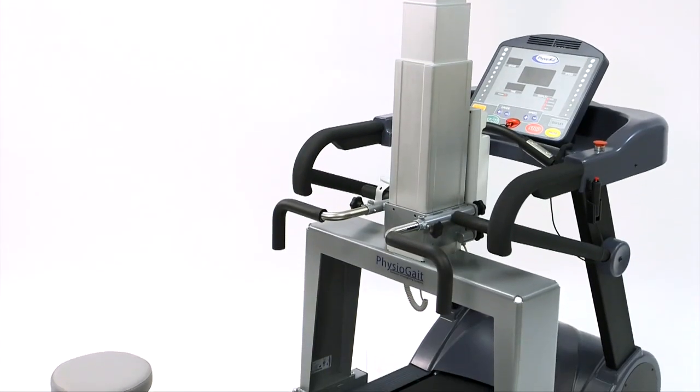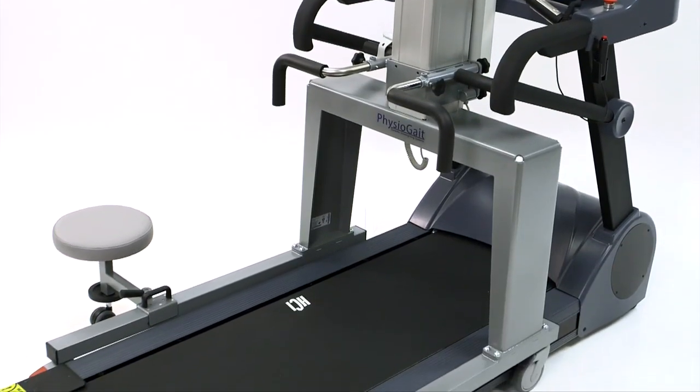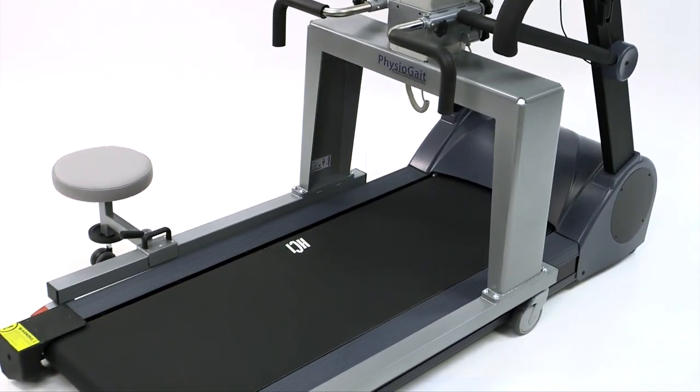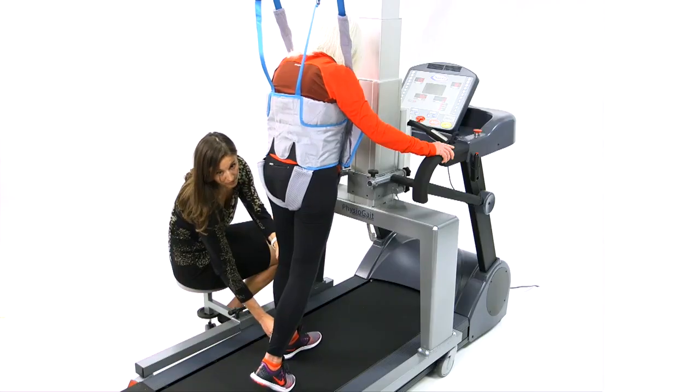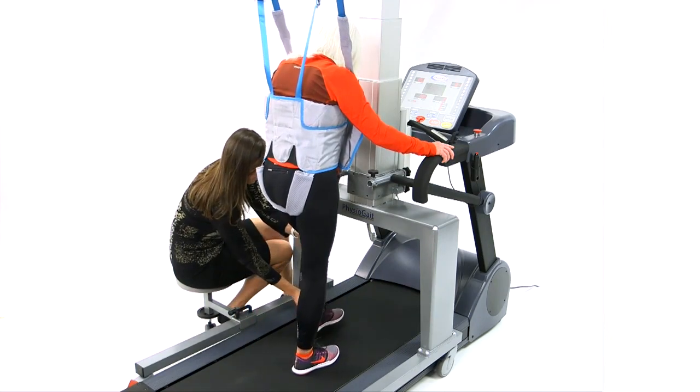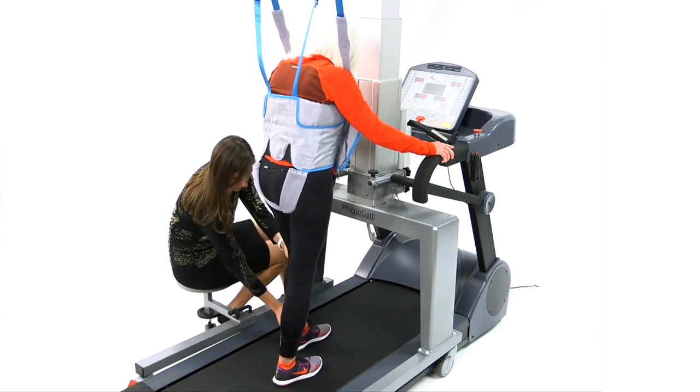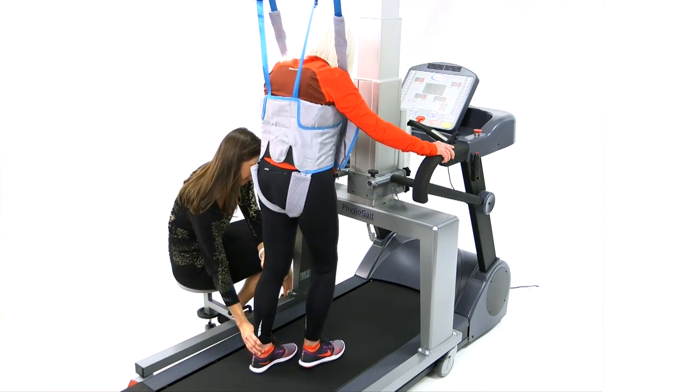The Physiogate can be purchased with a standard base or an XL base to accommodate a wide range of rehabilitation treadmills up to 34 inches wide. Combining the Physiogate Dynamic Unweighting System with the Physiomill or other treadmills allows for over-treadmill bodyweight-supported therapy.